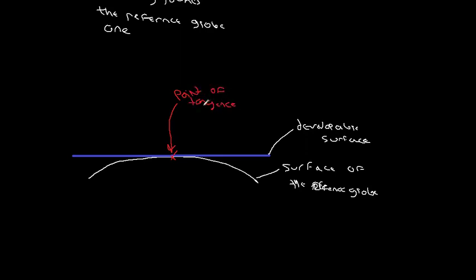And you can imagine if we had this in three dimensions, this point of tangency would be a line — would be a circle extending out like that.